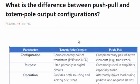Totem pole output is formed by PNP and NPN transistors, while push-pull is formed more with MOSFETs. You see push-pull configuration in many devices. Totem pole is used more when we talk about TTL logic.